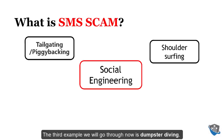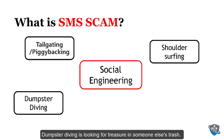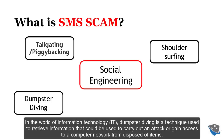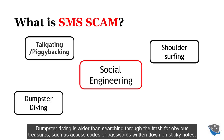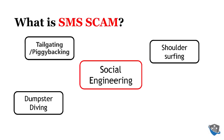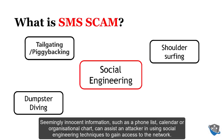The third example is dumpster diving. Dumpster diving is looking for treasure in someone else's trash. In information technology, it is a technique used to retrieve information from disposed items to carry out an attack or gain access to a computer network. This goes beyond finding passwords on sticky notes — seemingly innocent information such as a phone list, calendar, or organizational chart can assist an attacker in using social engineering techniques to gain network access.